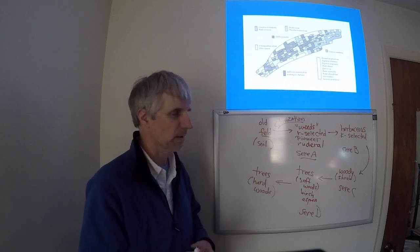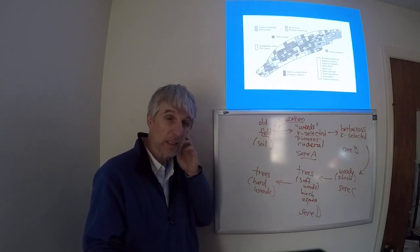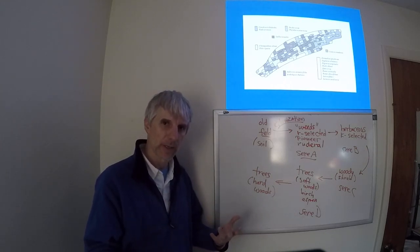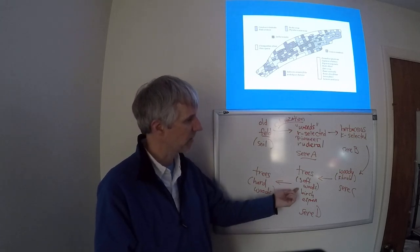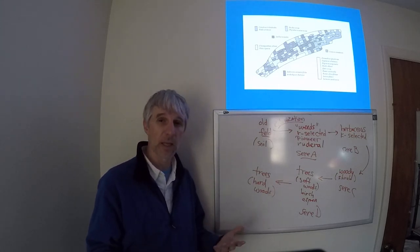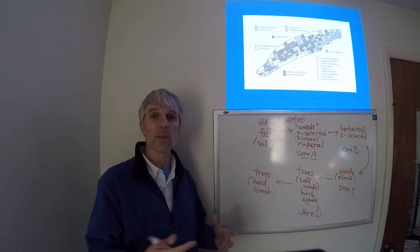Birch and aspen, trees that grow very quickly, their wood is not very good, it's not very strong, and in fact these trees are limited in how tall they can get because of the strength of their stems.